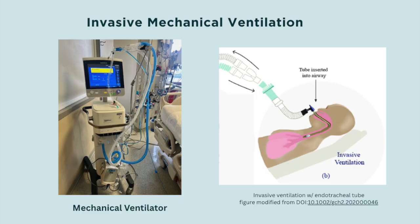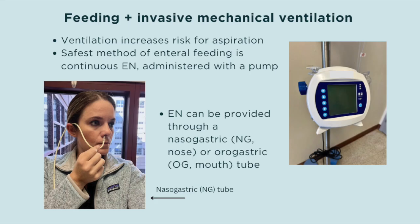The ventilator is a type of invasive mechanical ventilation. An endotracheal tube (ETT) is placed in the patient's airway to allow the ventilator to assist breathing. A ventilator can also be attached to a tracheostomy tube. If your patient is intubated or vented via endotracheal tube, they are at increased risk of aspiration, and the safest form of enteral nutrition is via continuous feeding using a tube feeding pump. To initiate continuous feeds, a patient must have enteral access, achieved by placing a nasogastric or orogastric tube.